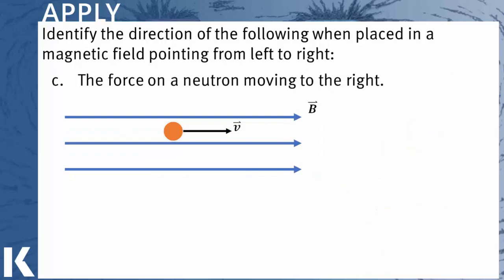Here we have a neutron moving to the right, and the key word here is neutron. One of the most important things to remember about magnetic force is it only occurs on a moving charge particle. So in this case, no charge means there will be no force.